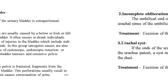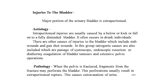The next point is injuries to the bladder. The major portion of the urinary bladder is extraperitoneal, whereas a minor portion — particularly the superior surface — is intraperitoneal. Injuries to the bladder may be either extraperitoneal, which constitute 80% of bladder injuries, or intraperitoneal, which constitute only 20%. Intraperitoneal injuries are easily caused by a blow, kick, or fall onto the fully distended bladder, and often occur in intoxicated individuals. Other causes include stab wounds and gunshot wounds. Iatrogenic causes include passage of a cystoscope, endoscopic resection, diathermic coagulation of bladder tumors, and extensive pelvic operations. When the pelvis is fractured, fragments may perforate the bladder, easily resulting in extraperitoneal rupture with extravasation of urine.